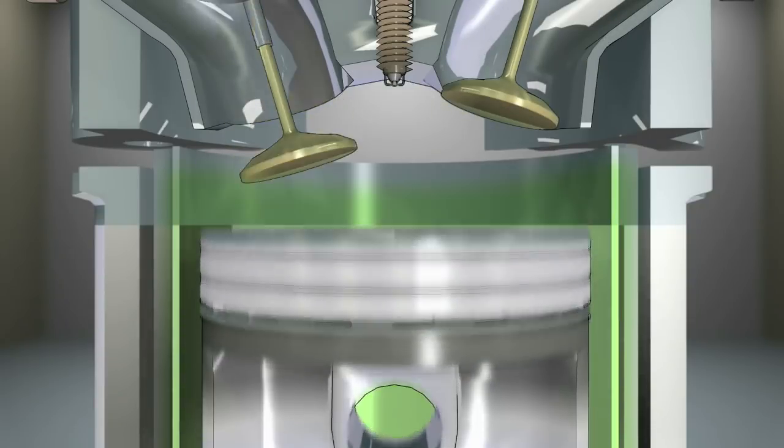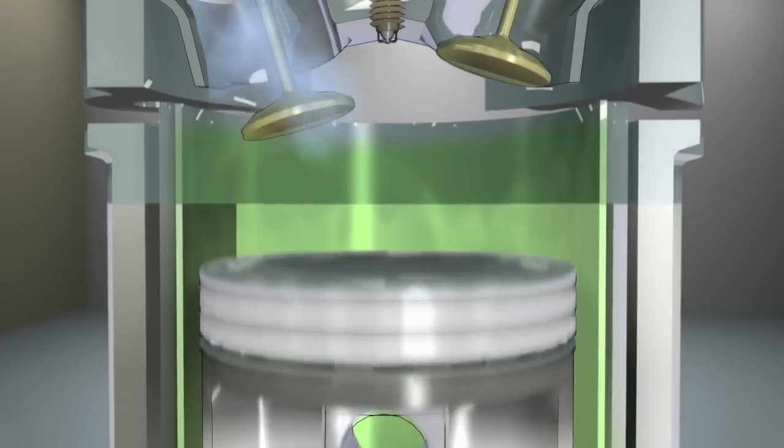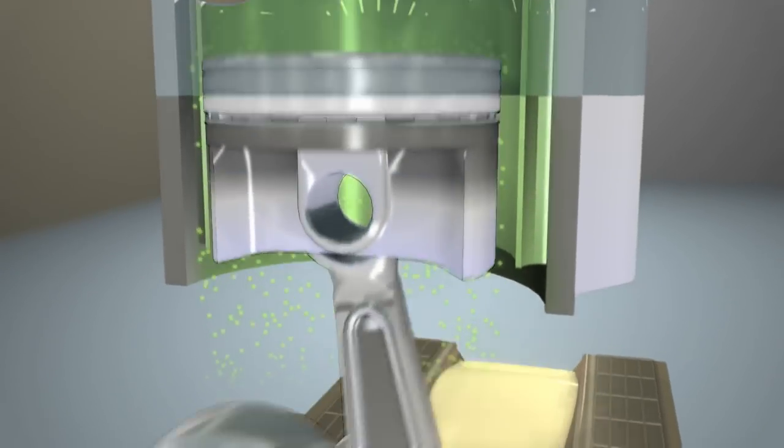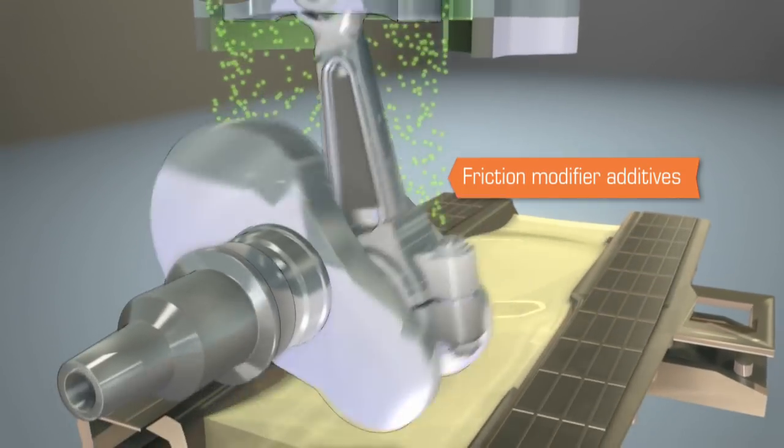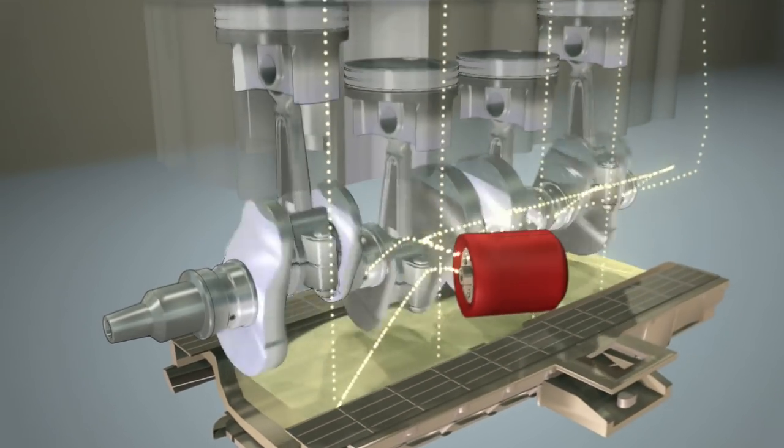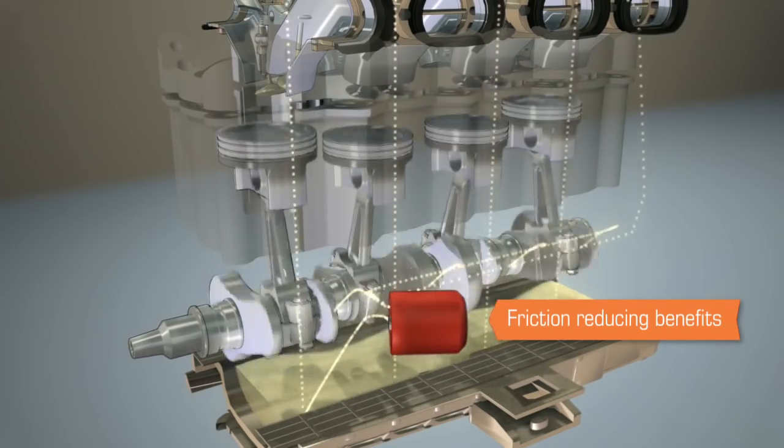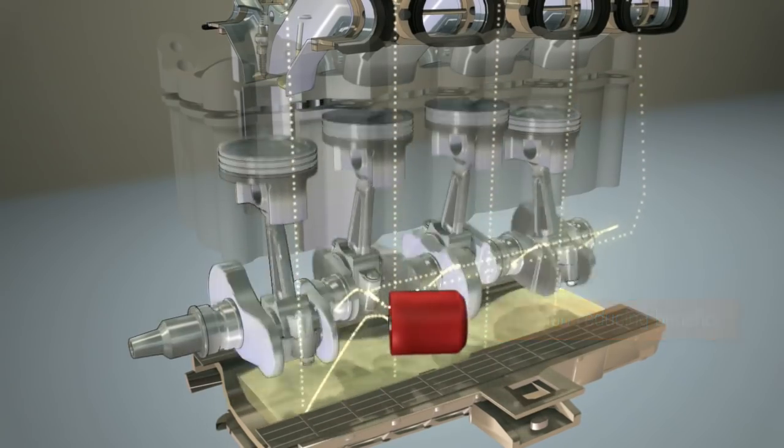While this sacrificial layer reduces friction and improves fuel economy, friction modifiers provide a second benefit. Some of the friction modifier additives drain down the cylinder walls and into the crankcase. There, along with the benefits provided by the engine oil, the friction modifiers provide important friction reducing benefits as the oil makes its way throughout the engine.